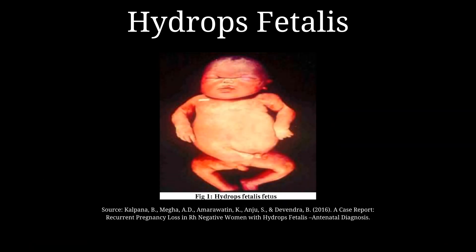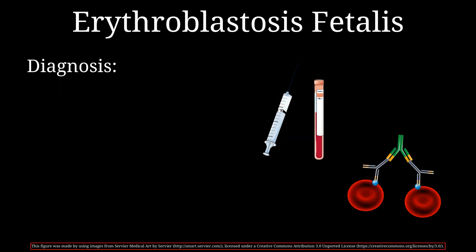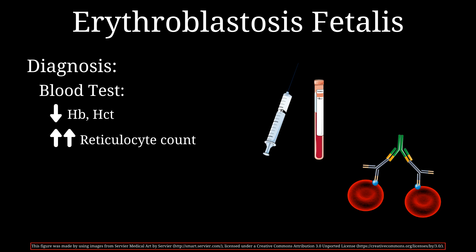Here is a picture of a baby who was suffering from hydrops fetalis. To diagnose RH incompatibility causing erythroblastosis fetalis, you can draw blood to find decreased hemoglobin and hematocrit levels and increased reticulocyte count in the baby. Reticulocytes are immature red blood cells — if a lot of red blood cells are getting destroyed, the bone marrow will pump out immature red blood cells as well, which can be detected on a blood test.